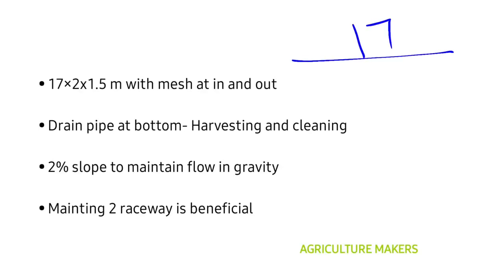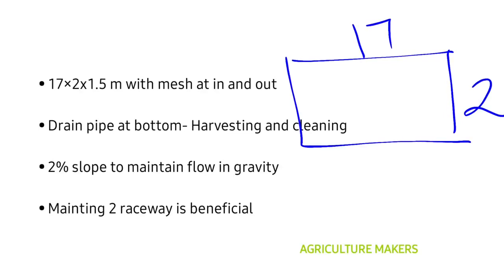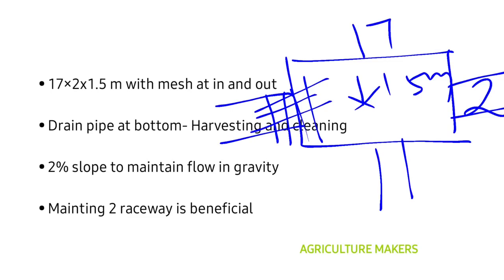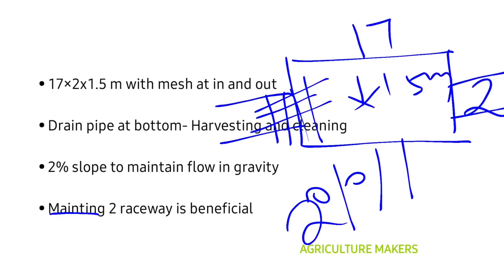The dimensions required are 17 meters in length, 2 meters in width, and 1.5 meters in depth. The inlet and outlet should be provided with mesh to prevent trout from escaping. There should be a drain pipe at the bottom, which is helpful in harvesting and cleaning debris. A 2 percent slope of the landscape should be provided to maintain water flow by gravity. Maintaining two raceways is beneficial — if one is under maintenance or cleaning, the other can still be used.